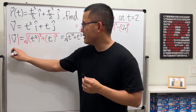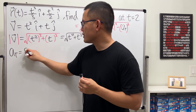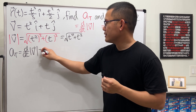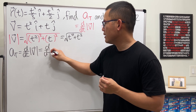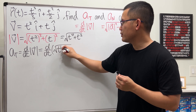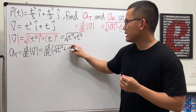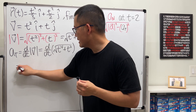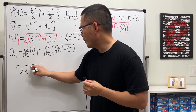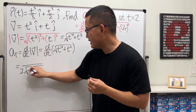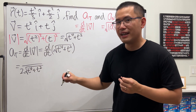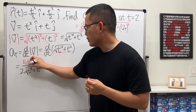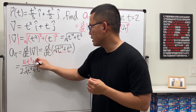Then Aₜ is just the derivative of our speed, which is the derivative of the square root of t⁴ plus t². Working that out, we get 1 over 2 times the square root of t⁴ plus t², and then using the chain rule we multiply by the derivative of the inside, which is 4t³ plus 2t.